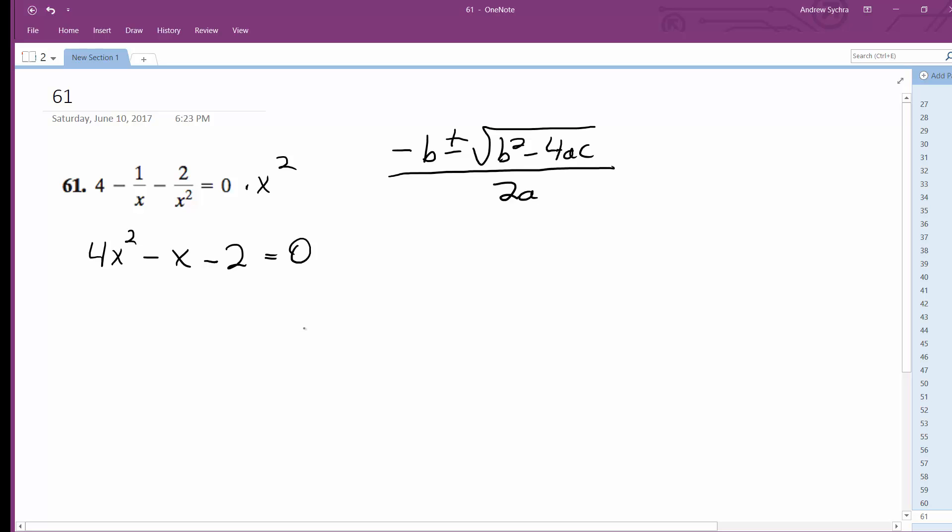So a is 4, b is negative 1, and c is negative 2. So opposite b, so 1 plus or minus b squared which is just 1 minus 4 times 4 times negative 2, all over 2 times 4.